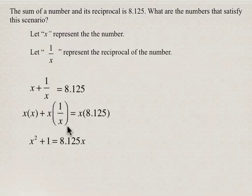Now we're going to rearrange this so that it's in our typical quadratic equation form. We're going to subtract 8.125x from both sides, so our quadratic equation is x squared minus 8.125x plus 1 equals 0.